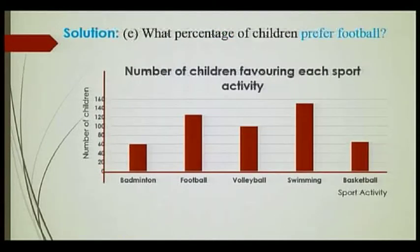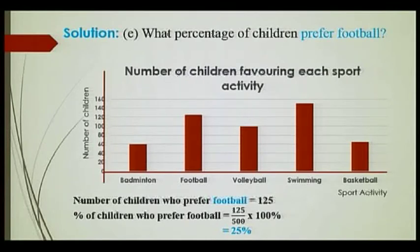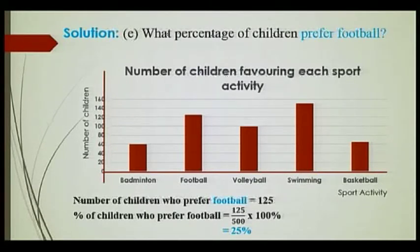Part E: What percentage of children prefer football? Football has 125 children. I need to find the total number of children by adding all the different frequencies, which gives me 500. To find the percentage, it's 125 over 500 times 100%, which equals 25%. So, 25% of children prefer football.